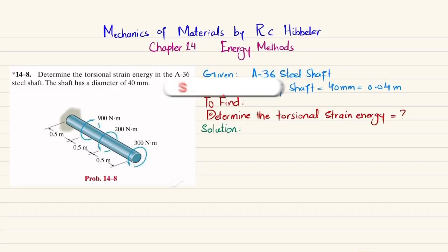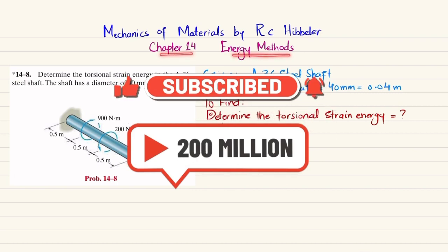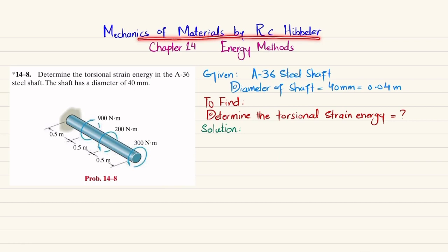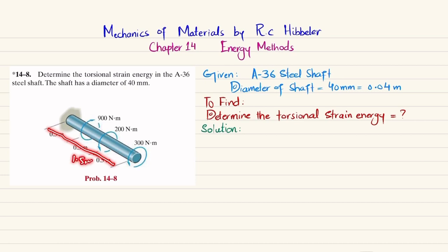Welcome back. In this video we are going to solve problem 14-8, taken from chapter number 14, Energy Methods, from the book Mechanics of Materials by R.C. Hibbeler. The problem states: determine the torsional strain energy in an A36 steel shaft. The shaft has a diameter of 40 millimeters, with a 300 N·m torque at one end, a 200 N·m counterclockwise torque, and a 900 N·m clockwise torque. The length of the shaft is 1.5 meters.